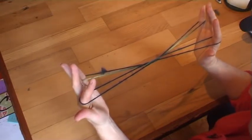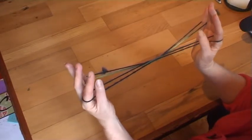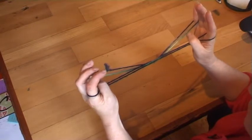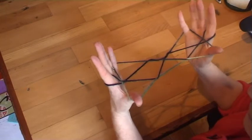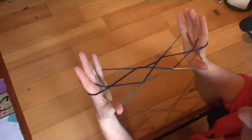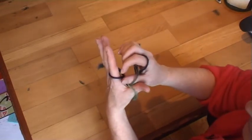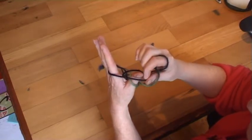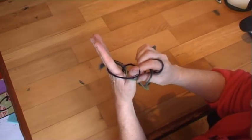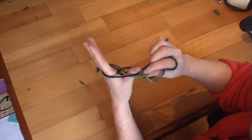Now take your thumbs over the first two strings and pull the third string back towards you. Now take the string on your index finger and pull it over the top of your thumb, and take the bottom string over the other way. Do the same with the other side.